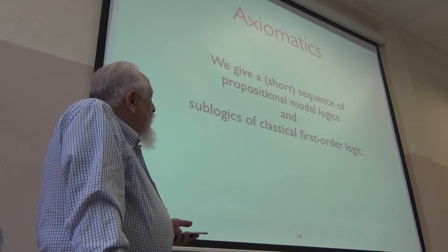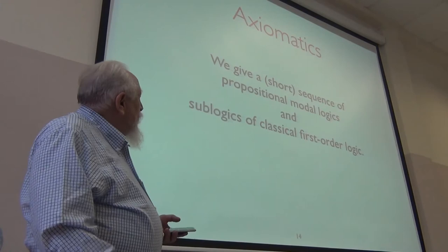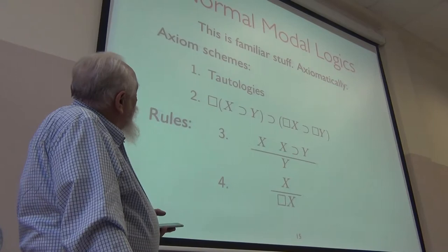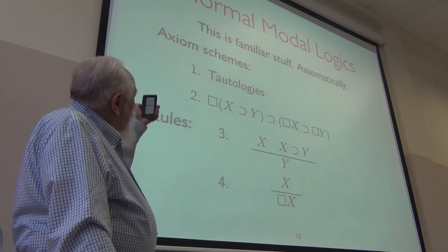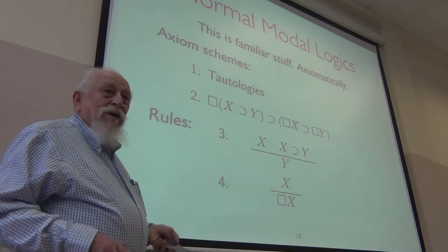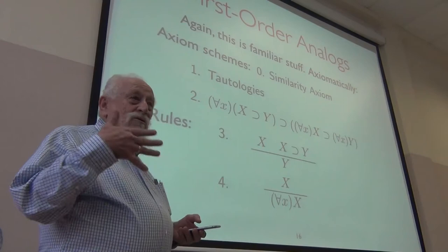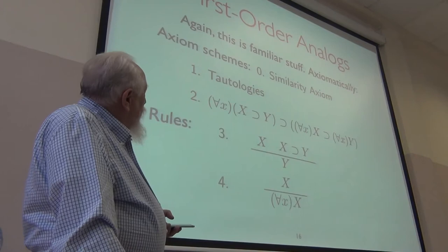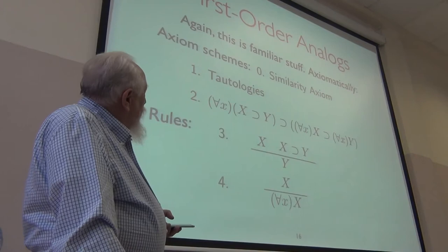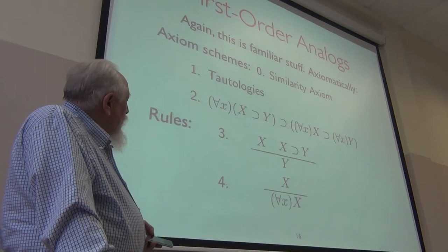I want to start with the most natural, simple modal and quantifier systems — normal modal logics. Axiomatically: tautologies, box distributes over implications (the K axiom), and as rules, modus ponens and necessitation. These are axiom schemes, not particular axioms. This axiomatizes the logic called K, the smallest normal modal logic. The first order analogs: the similarity axiom, tautologies, universal quantification distributes over implication, modus ponens, and universal instantiation. This is an exact parallel.